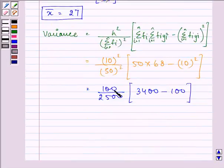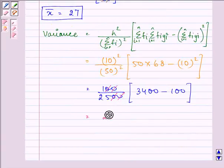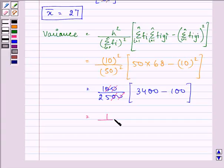On simplifying we have 100 divided by 2500 into 50 times 68 giving us 3400 minus 100, that is 100. So we have 1 upon 25 into 3400 minus 100, that is 3300 and the answer is 132.